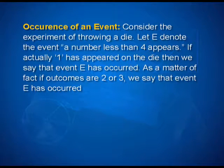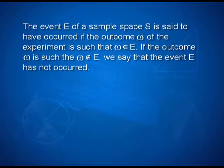Now let us understand what we mean by occurrence of an event. Consider the experiment of throwing a die. Let E denote the event that a number less than 4 appears. If actually 1 has appeared on the die, then we say that event E has occurred. As a matter of fact, if outcomes are 2 or 3, we say that event E has occurred. Thus, the event E of the sample space S is said to have occurred if the outcome omega of the experiment is such that omega belongs to E. If the outcome omega is such that omega does not belong to E, we say that the event E has not occurred.